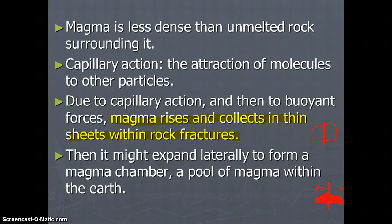Magma is less dense than the unmelted rock surrounding it because it's hot. We know that hot things are less dense, and also the particles are moving around a whole lot more than in solid rock. Another term we need to know is capillary action, which is the attraction of molecules to other particles. Sometimes molecules act like little magnets and get attracted to each other.